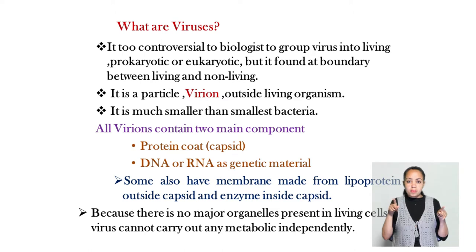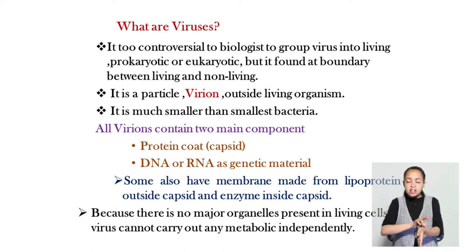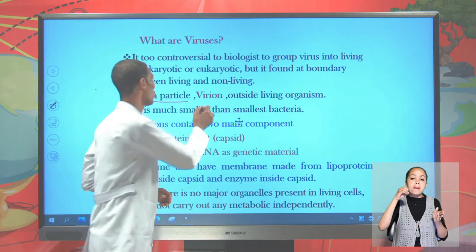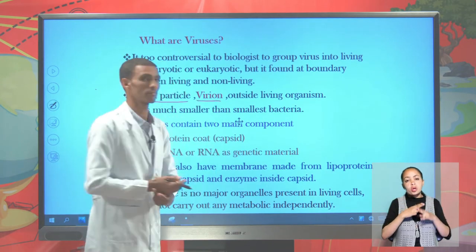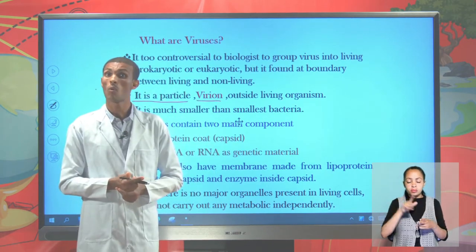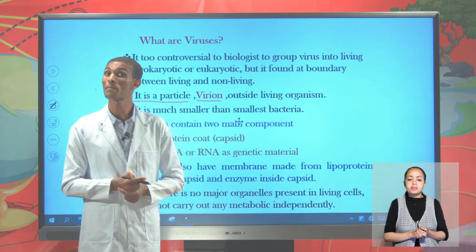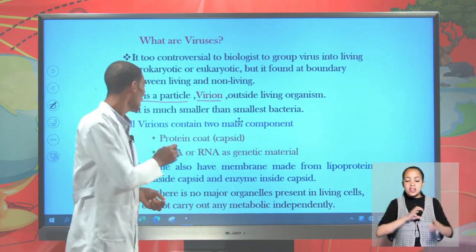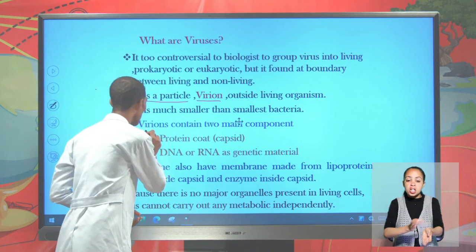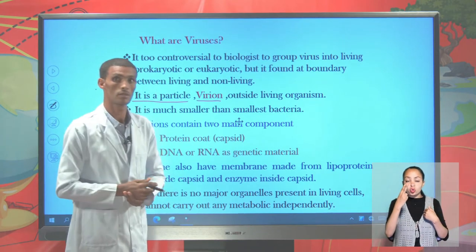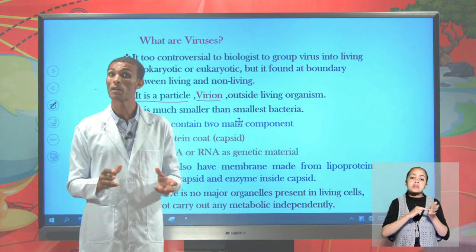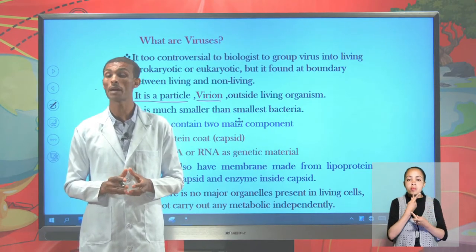Outside a living cell, virus is considered as a particle, which we call a virion. All viral particles outside a living cell contain the following two components: viral protein, which we call capsid, and viral genetic material.